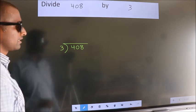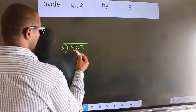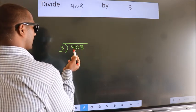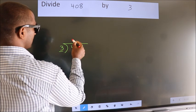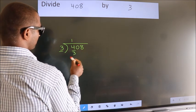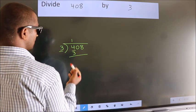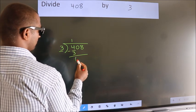Next, here we have 4. Here 3. A number close to 4 in 3 table is 3 once 3. Now we should subtract. We get 1.